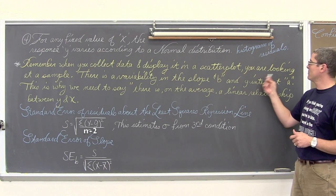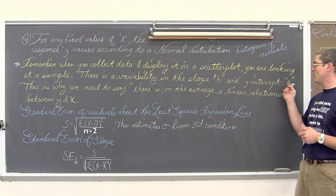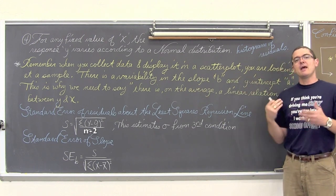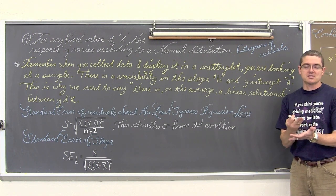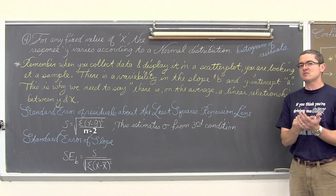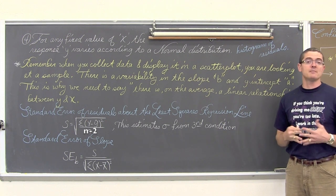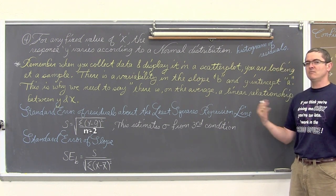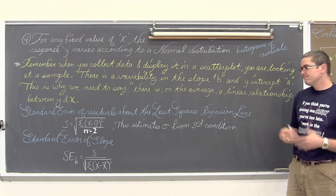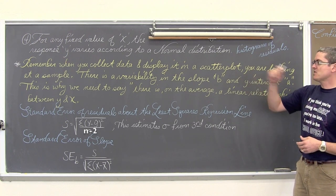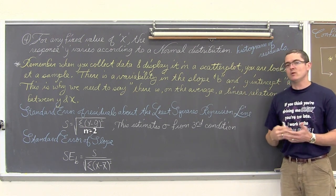When you collect data and display it in a scatter plot you are looking at a sample. There is variability in the slope b and the y-intercept a. That is, lowercase a is an estimator of alpha and lowercase b is an estimator of beta. When we look at a scatter plot it is only a sample, and there is variability in the slopes and y-intercepts. This is why we need to say there is on average a linear relationship between y and x.